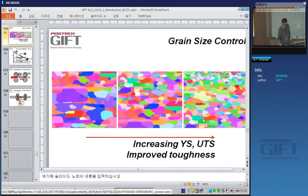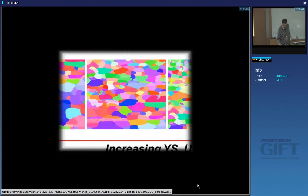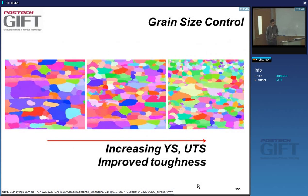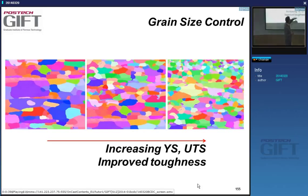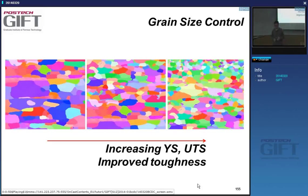We had been talking about grain sizes and we've seen that grain sizes influence the transformation — the grain size of austenite. Grain size control is a way to control the strength, in the sense that when you get lower grain size, you have an increase in the yield strength and very often also tensile strength, ultimate tensile strength. Smaller grain sizes are very beneficial for toughness.